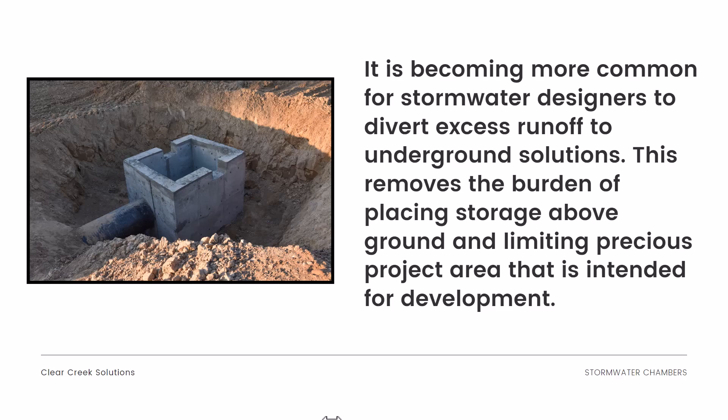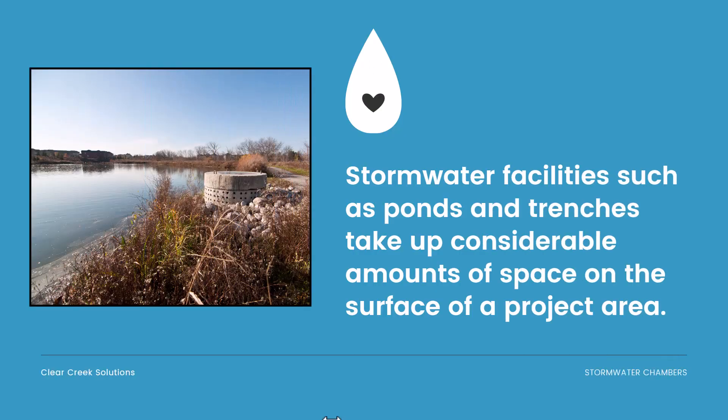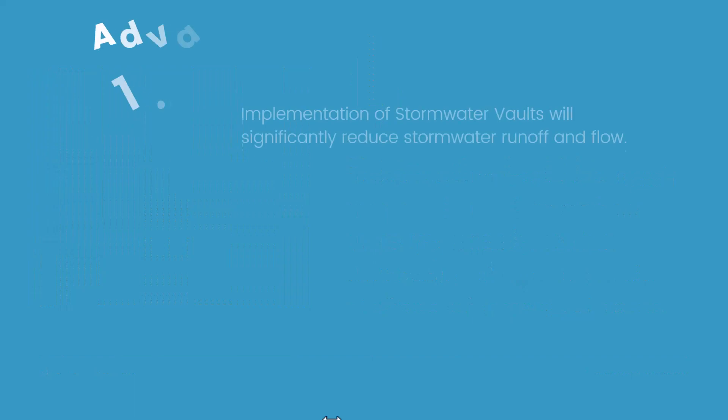You can see a storm capture element on the left here, which stores stormwater efficiently and then outlets it downstream. Stormwater facilities such as ponds, trenches, and bioretention facilities take up considerable amounts of surface space. While those facilities are still very useful, in high-density urban areas people will often opt for stormwater vaults instead.